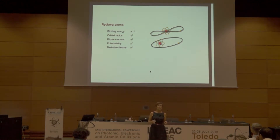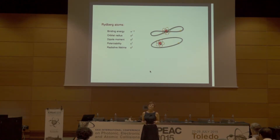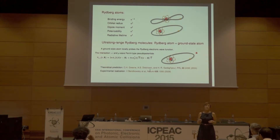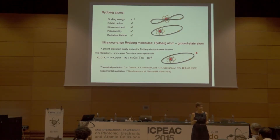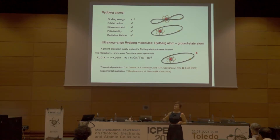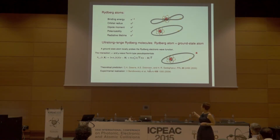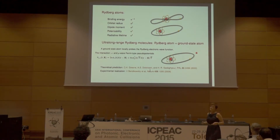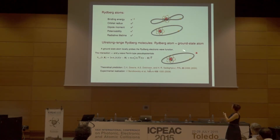If we think about this system, which is very large, and the experimentalists excite one of them in a gas — when the sizes are so large, on the order of microns — inside this Rydberg cloud there might be another ground state atom, or several of them. That gave rise to the first theoretical proposal that if we have such a gas with one Rydberg atom and several ground state atoms around it, there will be an interaction between these ground state perturbers and the Rydberg atom. That was proposed in 2000 — already 15 years ago — by Chris Green and Hussein Sadeghpour.